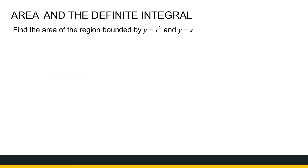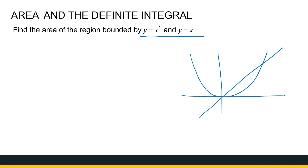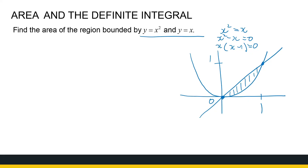Let's look at a nicer example. Find the area of the region bounded by y equal to x squared and y equal to x. We can sketch those nicely — y equal to x squared and y equal to x. They intersect at 0 and at 1, because where x is equal to 1, y is equal to 1. To find this algebraically, set x squared equal to x, so x squared minus x equal to 0, giving x times x minus 1, so x equal to 0 and x equal to 1. I want the area between those two curves, so I want the integral from 0 to 1 of x squared dx.